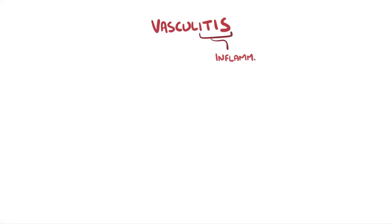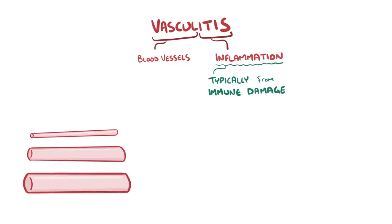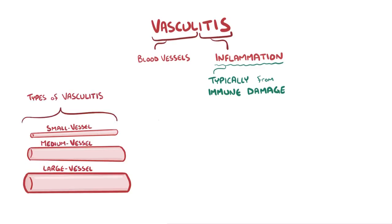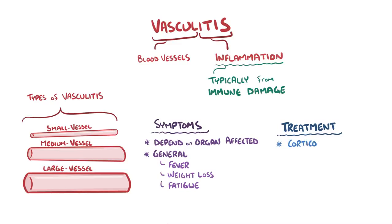As a quick recap: vasculitis means inflammation of the blood vessels, typically caused by immune-mediated damage to the endothelial cells. Based on the size of blood vessels affected, there are small vessel, medium vessel, and large vessel types. Symptoms vary based on the organs supplied by the affected blood vessel, but general symptoms include fever, weight loss, and fatigue. Treatment for vasculitis includes corticosteroids.